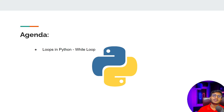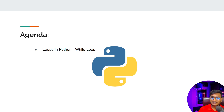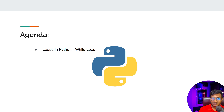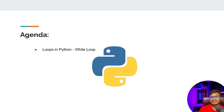Hello everyone, welcome back. In this video we'll be discussing another very important Python concept called loops. There are two kinds of loops available in Python: while loop and for loop. In this particular video I'll be discussing about while loop — what it is, why it's important, and how we can write while loops in Python, including syntax and practical implementation.